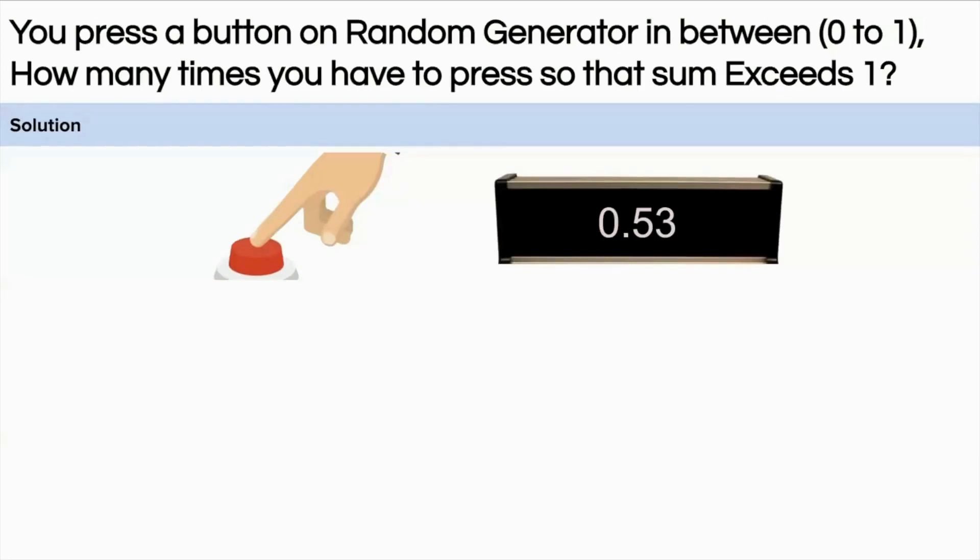Suppose you have a random generator machine and when you press the button it generates a number between 0 to 1. The question is, on average, how many times you need to press the button so that the sum of the numbers you have got exceeds 1.